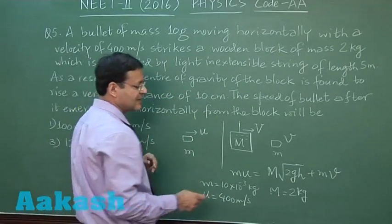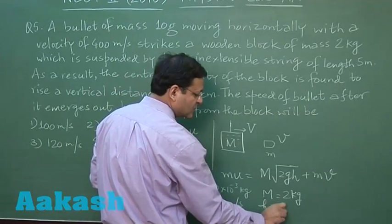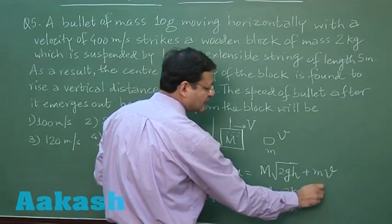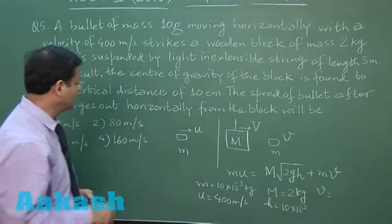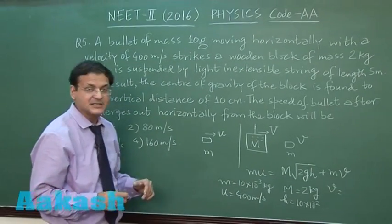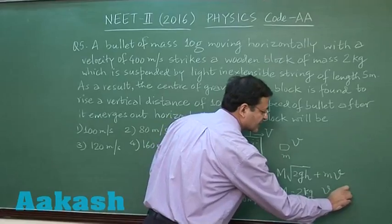So h value has been given as 10 × 10⁻². If you substitute all these things, you have to calculate the value of v. So if you do the calculation, you will be getting the value of v as 120 meters per second.